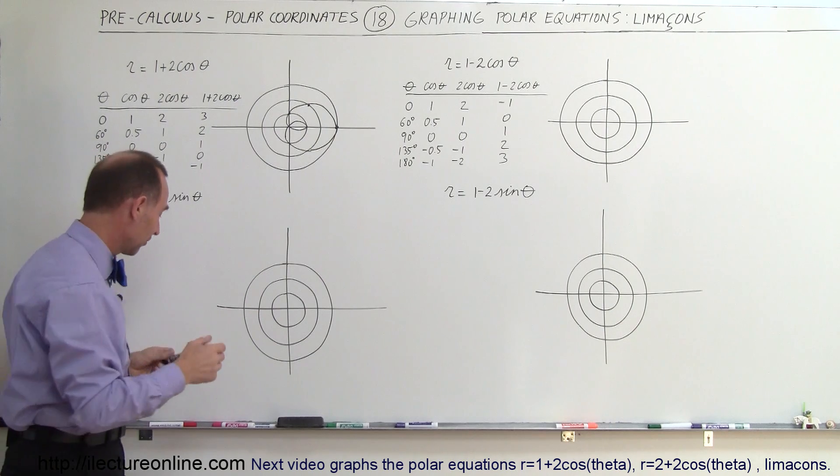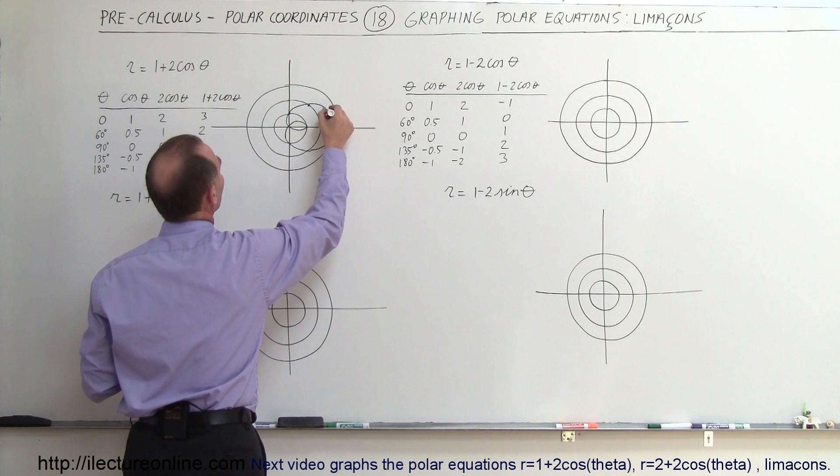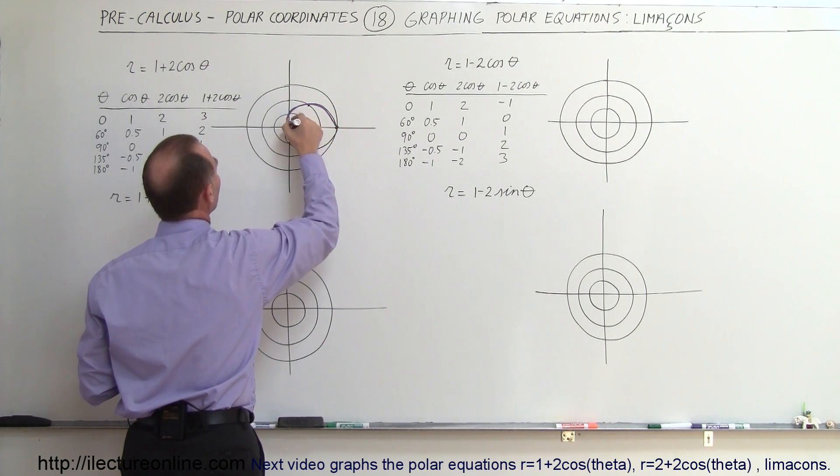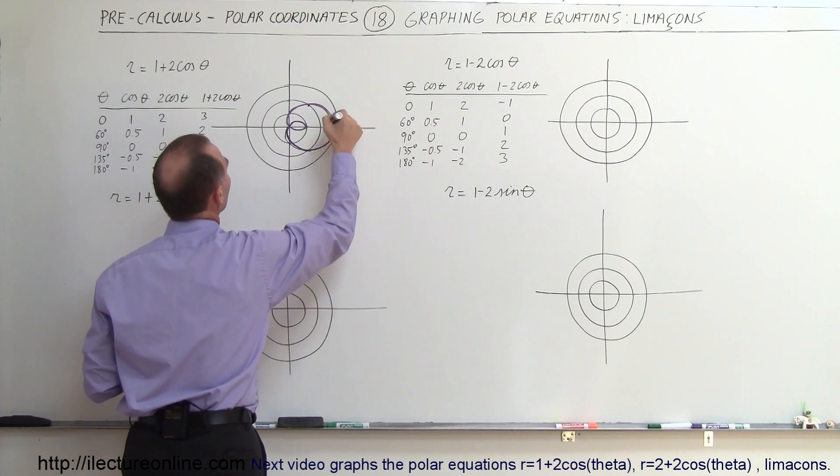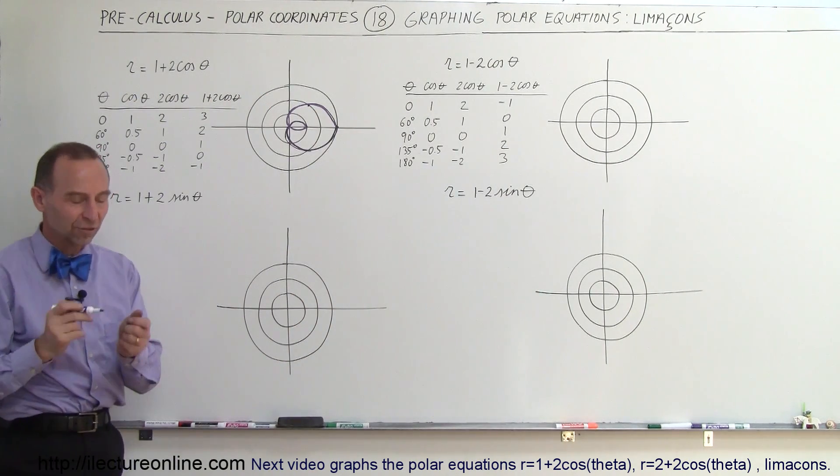Now, probably I should have used a different color, so let me go ahead and redraw that right next to it using some purple so you can highlight a little bit so you can see that this is what it looks like. There. That's a typical limaçon for r equals 1 plus 2 times the cosine of theta.